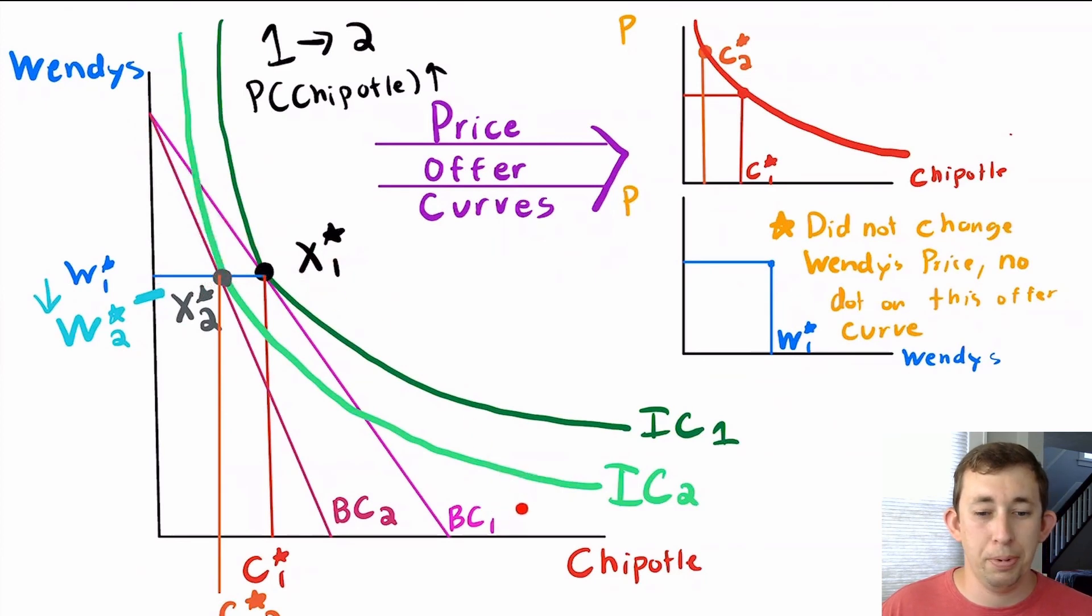So here I'm changing the price of Chipotle, so Chipotle gets a price offer curve. I'm not changing the price of Wendy's, so Wendy's does not get a price offer curve.